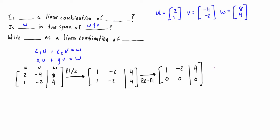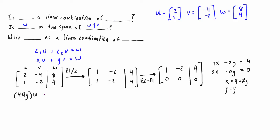And that's as far as we can go. What this matrix is really representing is a system of linear equations. Using the letters x and y, the system is just: 1x - 2y = 4, and 0x - 0y = 0. So we can rearrange this to write x = 4 + 2y. And then if we have an expression for x, we also want to write an expression for y — and y is basically just equal to itself. So x just depends on y.